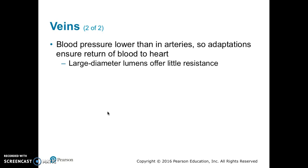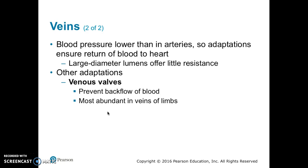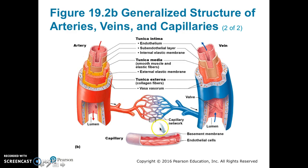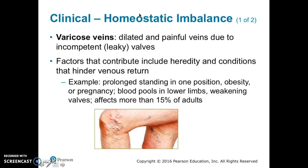Because blood pressure is lower in the veins than arteries, our bodies have adaptations to ensure blood can return to the heart. Veins have large-diameter lumens providing very little resistance, and they have valves that prevent backflow of blood — most abundant in the limb veins. Venous sinuses are flattened veins with extremely thin walls composed only of endothelium; examples include the coronary sinus of the heart and the dural sinuses of the brain. The valve prevents blood from flowing back down, holding it before it gets pushed further toward the heart.